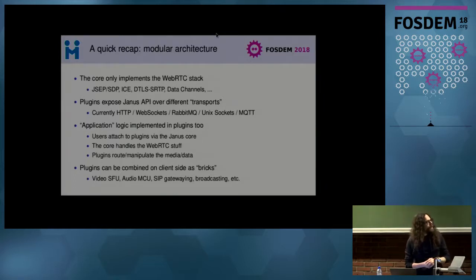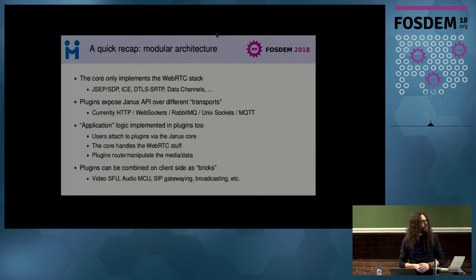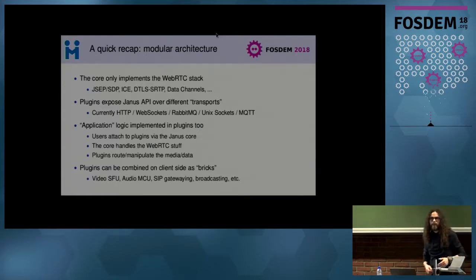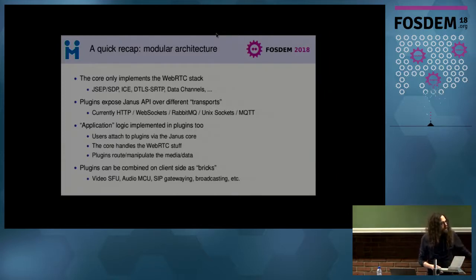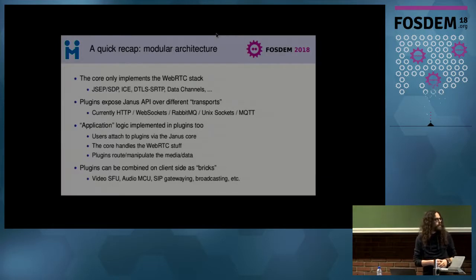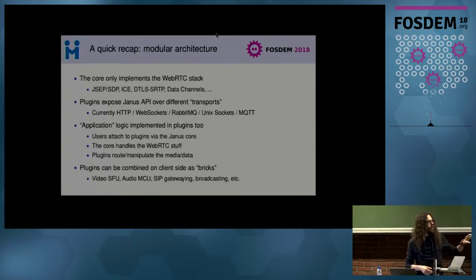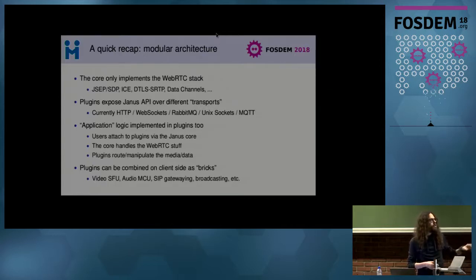We have a Janus API — a way to communicate with and control Janus — available over different protocol transports. More importantly, all media logic is implemented as different plugins, so you can write a new plugin to have Janus behave differently. Stock plugins provide an SFU for basic video conferencing, an audio mixer, ways to talk to the SIP world, and RTSP cameras.